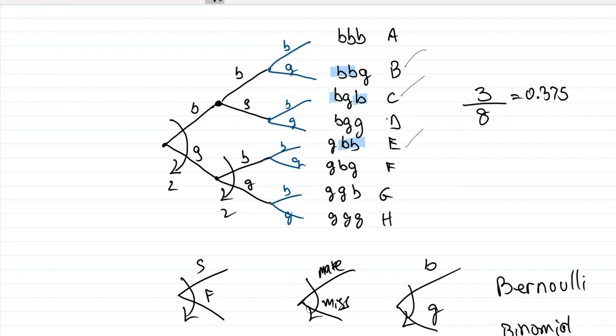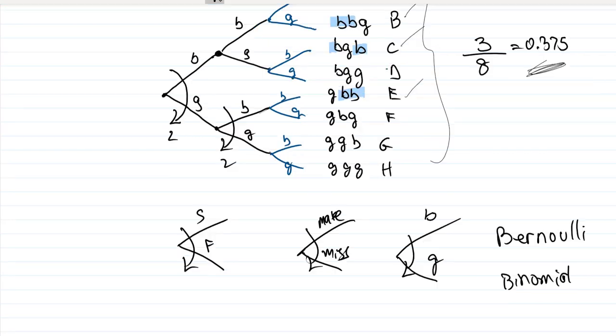We ended up seeing that there were three ways to have two boys out of the total of eight possible random events, giving us three out of eight. So the probability would be three out of eight, or 0.375.